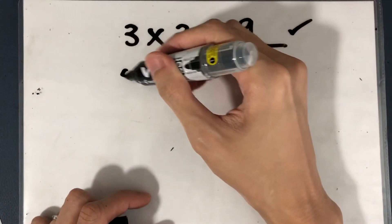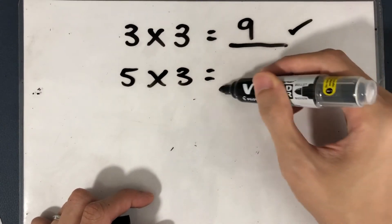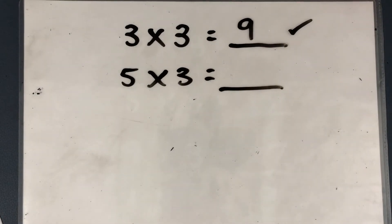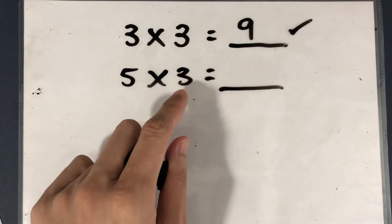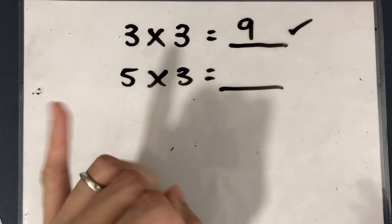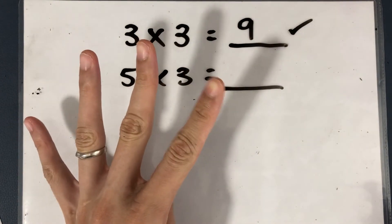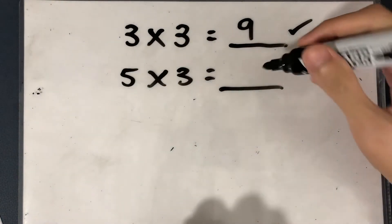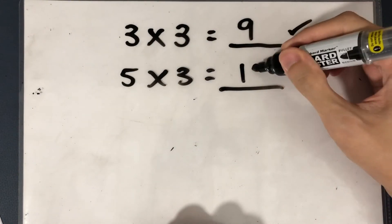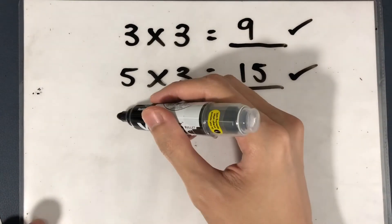Let's start with the second example. What is 5 times 3? Pause the video and try it on your own. 5 fingers on the 3 times table: 3, 6, 9, 12, 15. The answer is 15. If you got 15, give yourself another pat on the back.